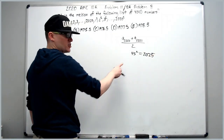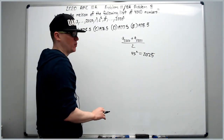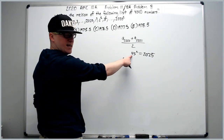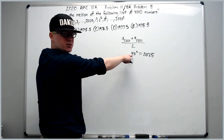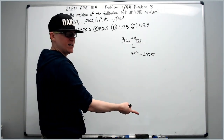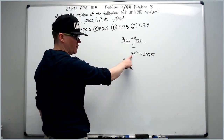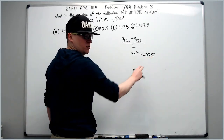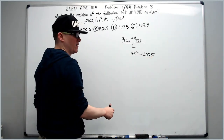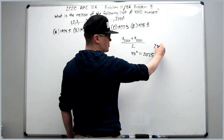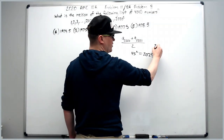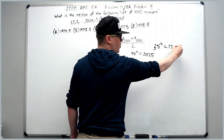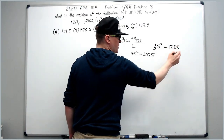There is a trick to numbers that end in 5 when you square them. All you do is take the tens digit, multiply it by the next number up the number line. So 4 times 5 is 20 and you throw 25 on the end. Quick example: 35 squared would be 3 times 4 is 12, with 25, giving 1225.